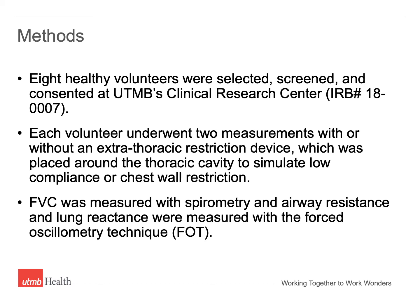We recruited eight healthy volunteers. Each volunteer had two measurements done, one with restriction and one without. Restriction was achieved by placing a corset-like belt around the thorax and tightened to decrease thoracic compliance by creating a chest wall restriction. We measured forced vital capacity and FEV1 with a portable spirometer. Likewise, FOT was performed with ResMed Pro to measure airway resistance and lung reactants with or without restriction in each volunteer.